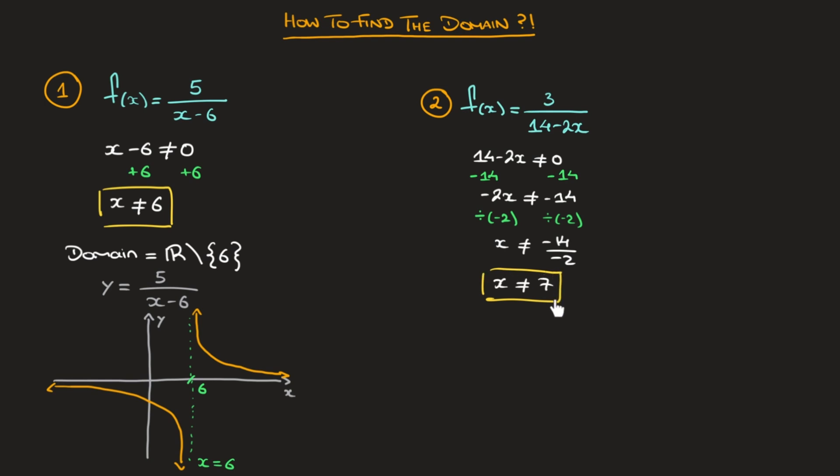And so provided x doesn't equal 7, the denominator will never equal 0. And the function, therefore, will be well defined. And so we can write the domain is equal to all real numbers excluding 7.